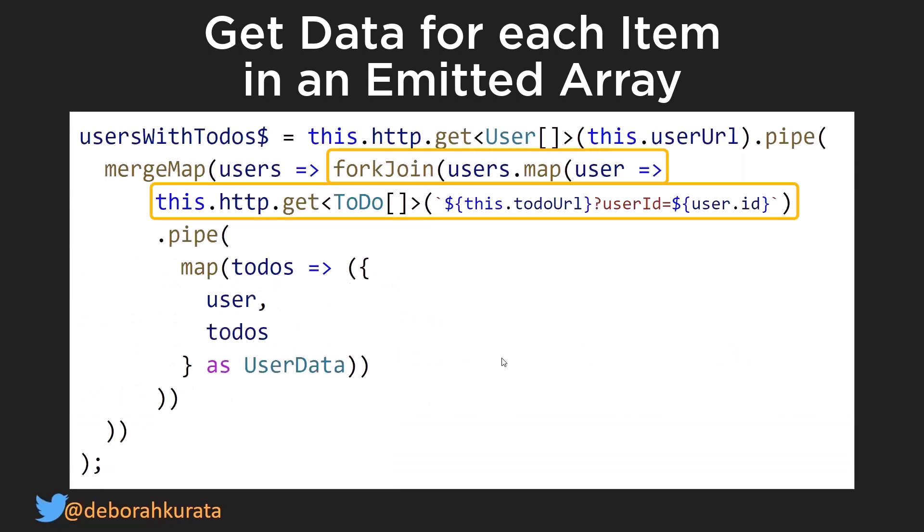A fork join waits for all observables to emit and complete. A fork join won't emit until all of its observables — however many it has — are complete, and then it emits the last value from each one.